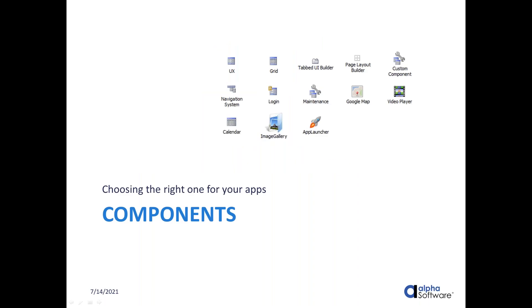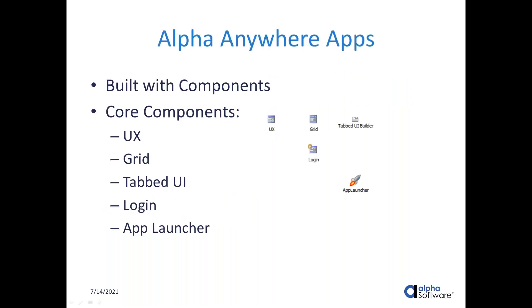Today we're going to talk about components in Alpha Anywhere — what these different types of components are and which one you should consider using for the type of apps you want to build. Alpha Anywhere applications are created with components, which are files specific to Alpha Anywhere in which you build your UI layouts. Alpha Anywhere has five core components that most people focus on: the UX component, the grid component, the tabbed UI builder, the login component, and the app launcher.